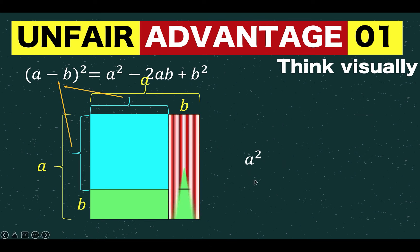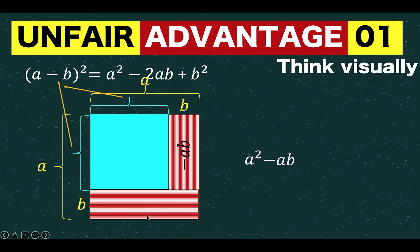But we are going to deduct the area of this rectangle, which is minus ab, and the area also of this other rectangle at the bottom, which is again negative ab. But wait a minute...